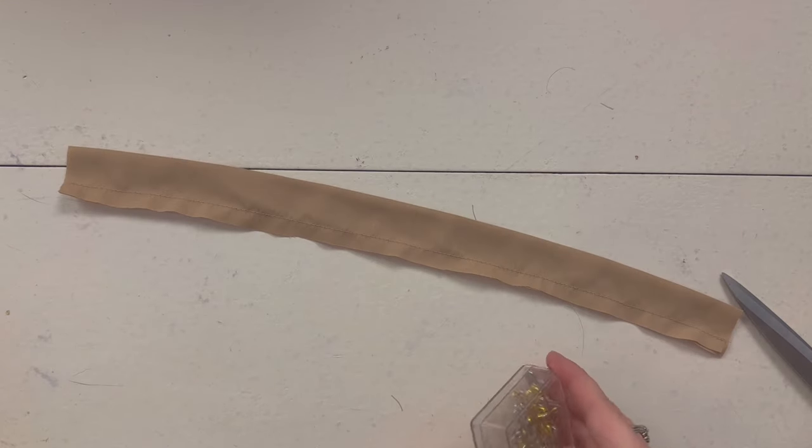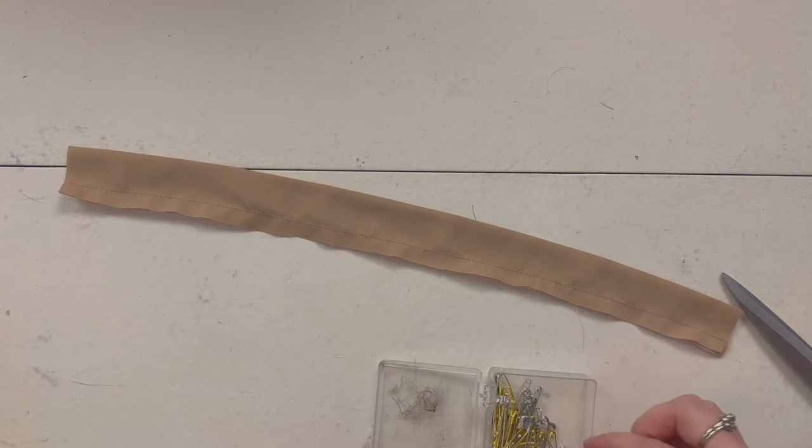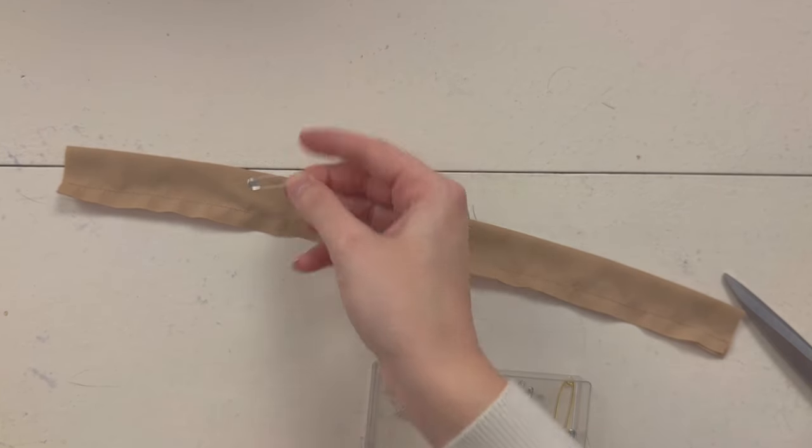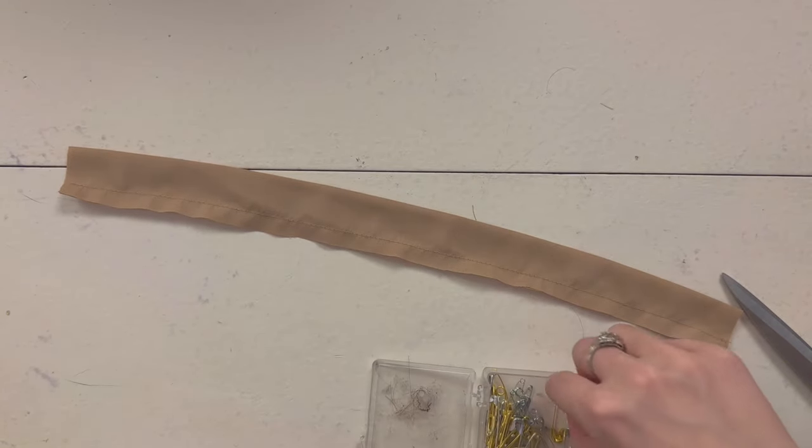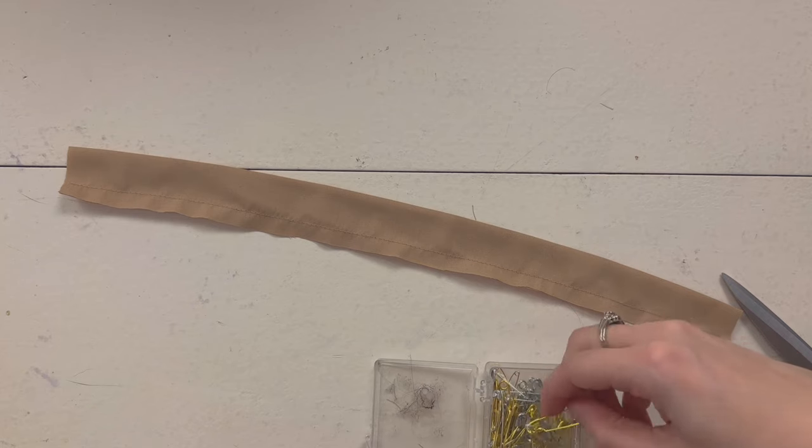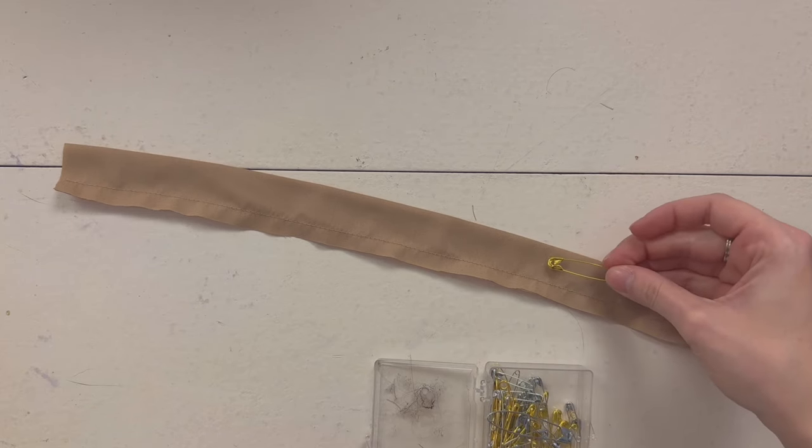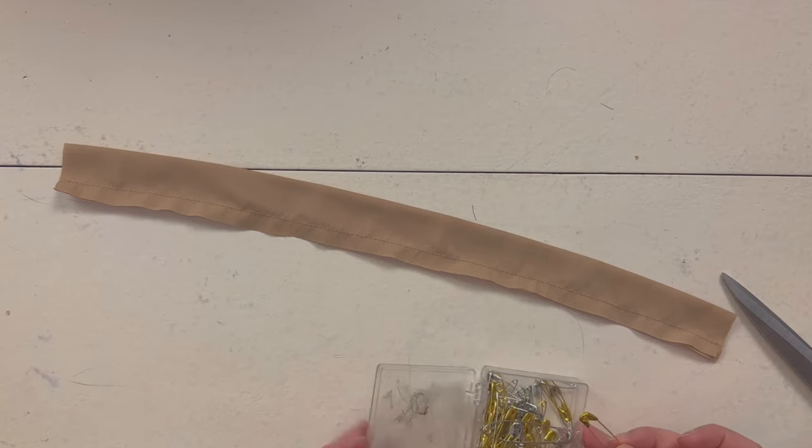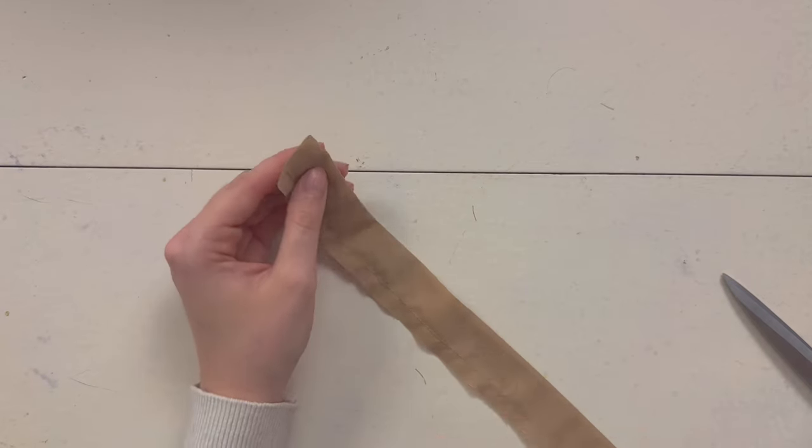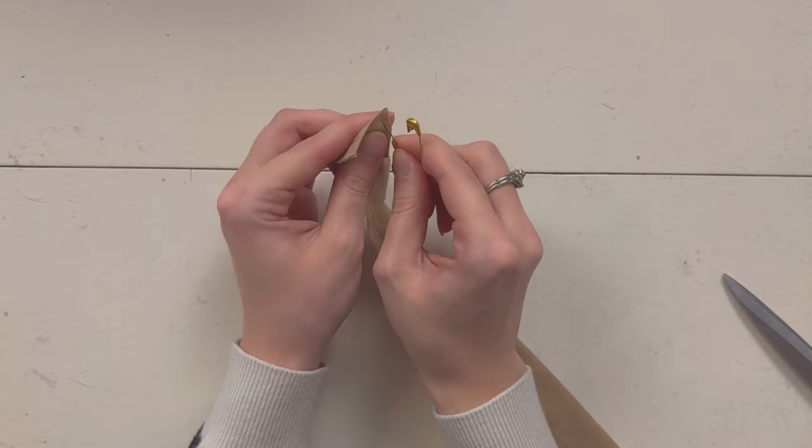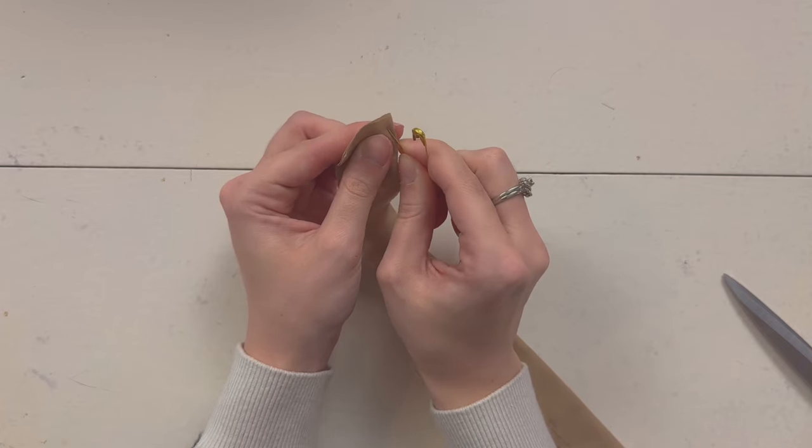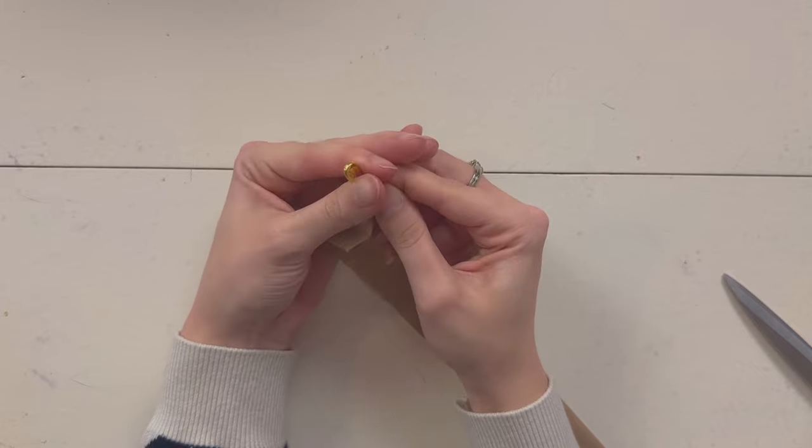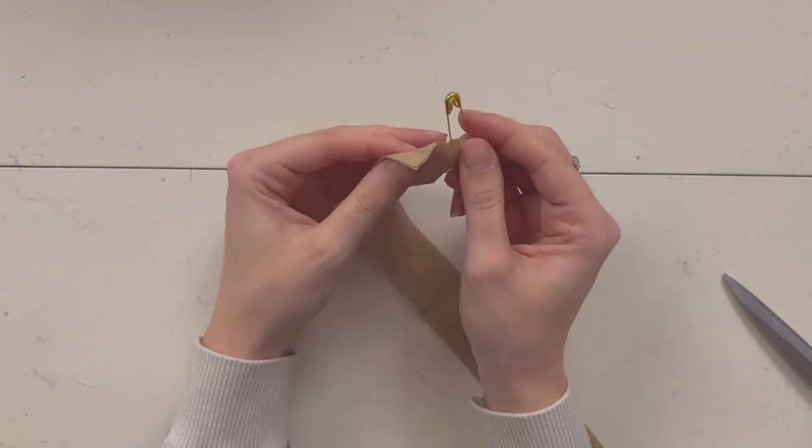All right, now choose a safety pin. How big it is is going to depend on your fabric. I think I could even use a bigger one. Yeah, let's do that. Let's do this one. This one's a little big. Okay, so place your safety pin at the start of your strap. Like this, and then close it.